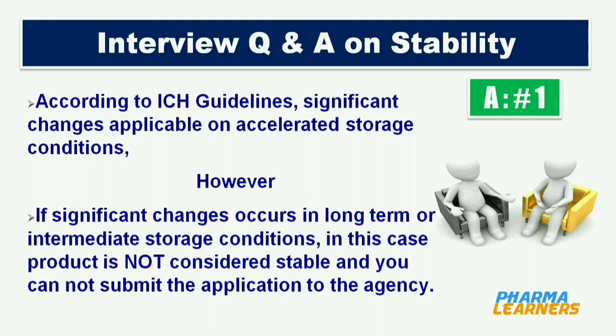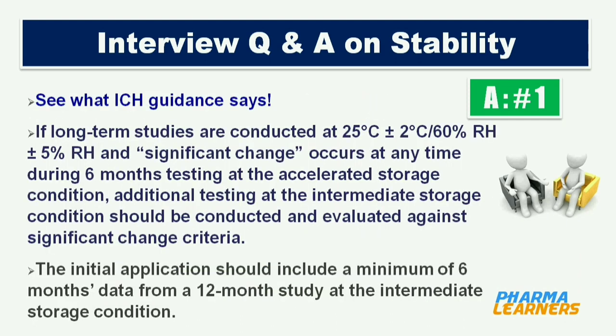Let's see what ICH guidance says. If long-term studies are conducted at 25°C ±2°C and 60% ±5% relative humidity, and significant change occurs at any time during six months testing at the accelerated storage conditions, additional testing at the intermediate storage condition should be conducted and evaluated against significant change criteria. The initial application should include a minimum of six months data from a 12-month study at the intermediate storage condition.